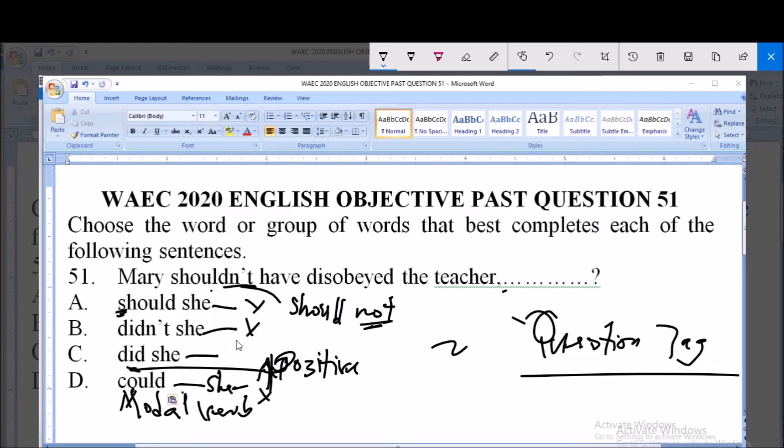The correct option is did she. That would be the correct question tag. Mary shouldn't have disobeyed the teacher, did she? So option C is correct.